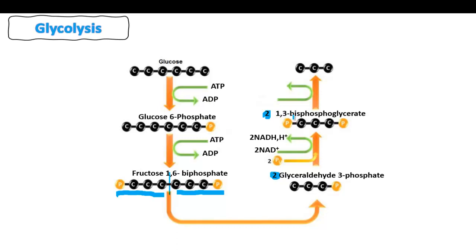The last step is going from 1,3-bisphosphoglycerate to a new molecule called pyruvate. Pyruvate is a three-carbon molecule. Comparing the two, this molecule lost two phosphates, which are used to make ATP: the phosphates react with ADP to make ATP. For one bisphosphoglycerate we have two phosphates, producing 2 ATP. Since we have two of them, we produce a total of 4 ATP. All these reactions happen in the cytoplasm.